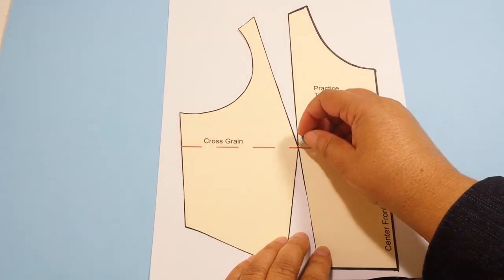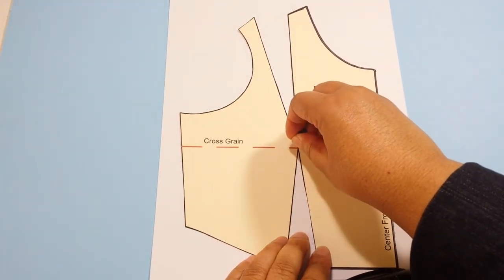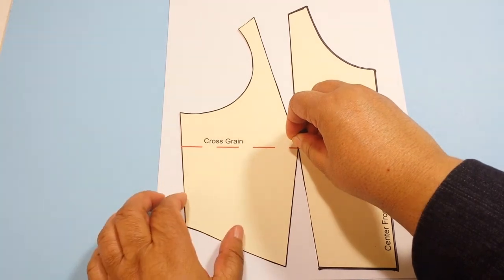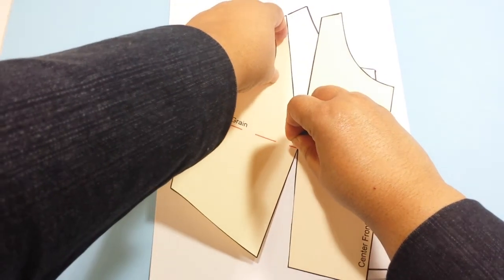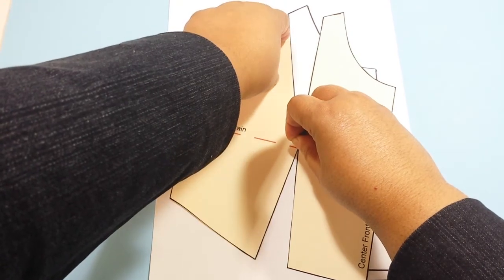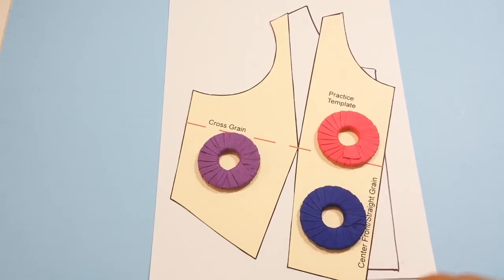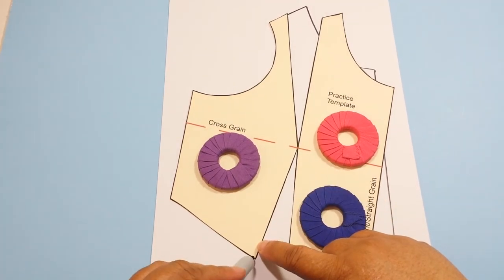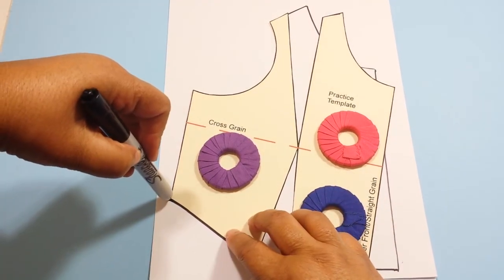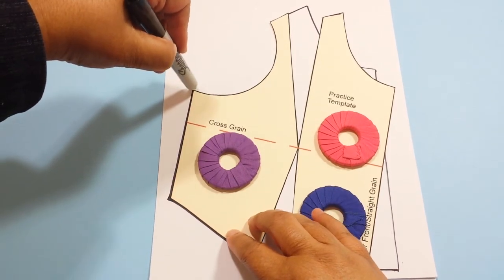Now we want to get our push pin and put it right in to our bust point and we're going to close our shoulder dart. Now that our shoulder dart is closed, we can continue tracing. So we're going to start from the other side of our waist dart and trace around until we get back to our shoulder.